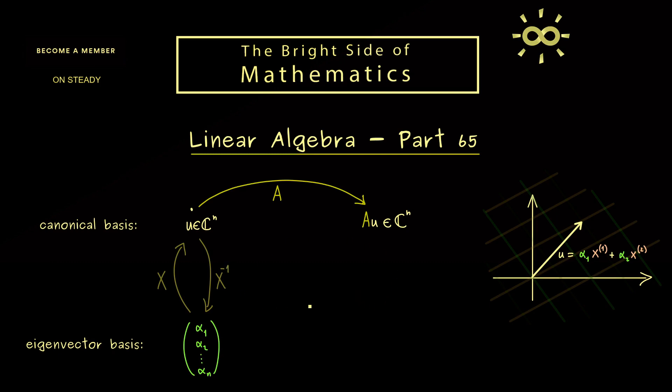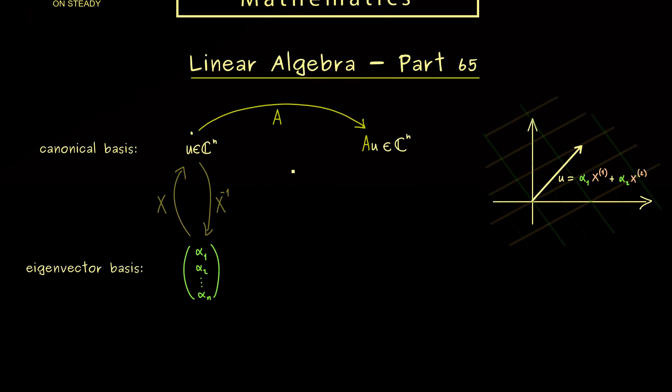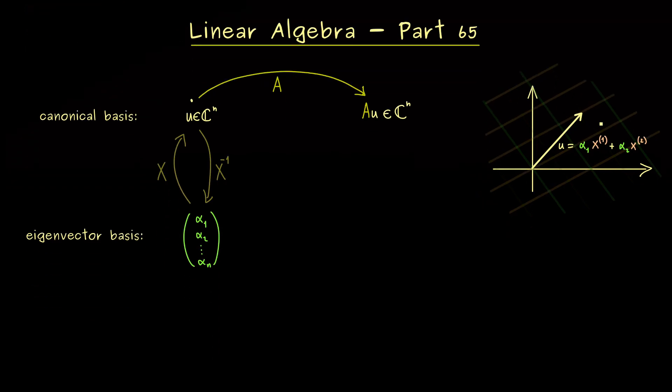But here, please don't forget, we already know what the matrix A does in the direction of the eigenvectors. Namely, it only scales in this direction, hence the whole action is given as a diagonal matrix.